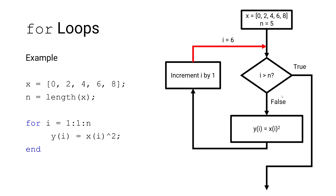After we've completed our fifth loop pass, our loop variable — or array index — has a value of 6. This value is greater than our final value of 5, and since that statement is true, our for loop ends. Now let's jump over to MATLAB and implement this problem.